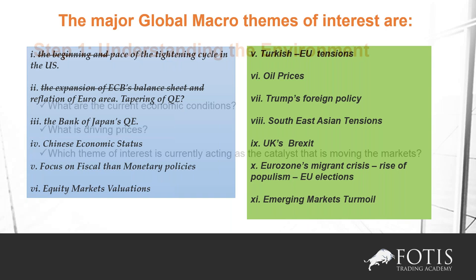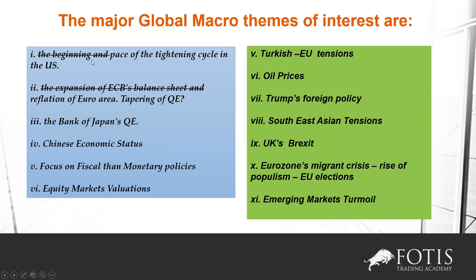Let me show you how we are doing it at the Firtis Trading Academy at a weekly level. Every week, every Monday, we hold an investment committee meeting and try to understand for that particular week what is the main theme of interest and how things are evolving. Number one: the beginning and pace of the tightening cycle in the US. I have crossed out 'the beginning' to show you how things have evolved. In 2015–2016, the main theme was when this is going to begin. That has now started, so it's all about the pace of the tightening cycle — how fast we are going to raise interest rates, once this year, twice, three times. This is very important for US yields, the US dollar, and US equity markets.